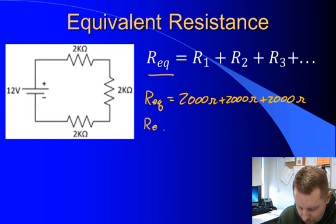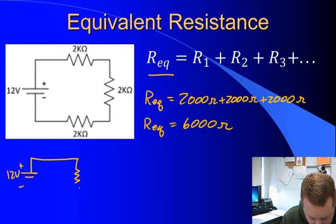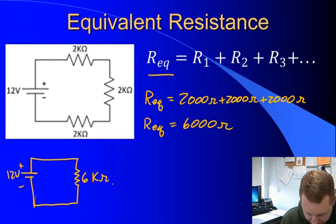We could draw an equivalent circuit that still has our 12 volt potential difference, but replaces those 3 resistors with one single resistor of 6,000 ohms, or 6 kilohms.